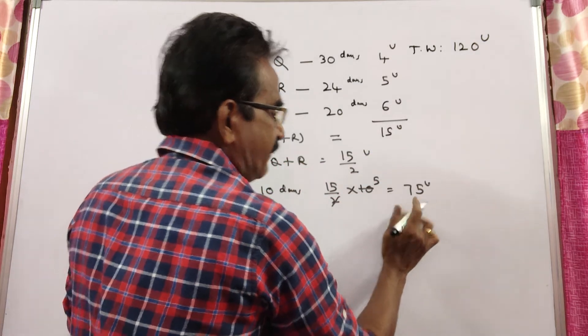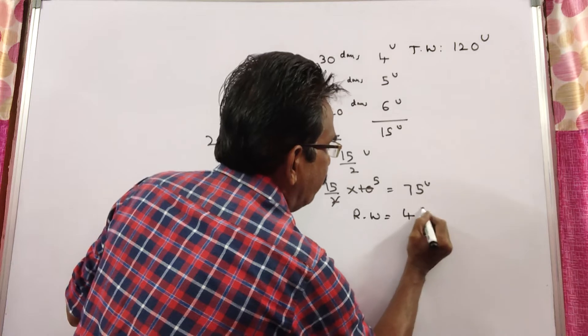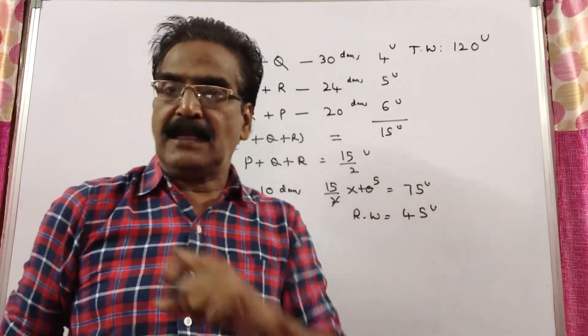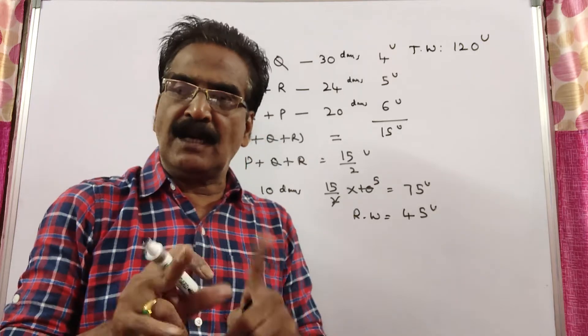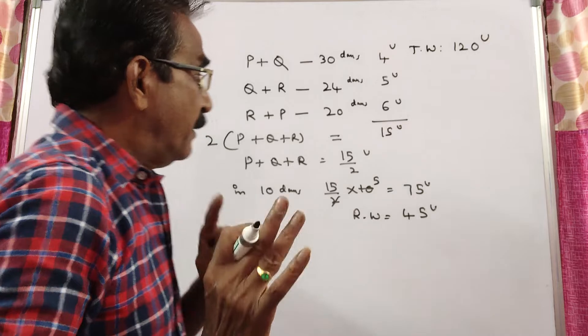120 minus 75, remaining work is equal to 45 units. This 45 units of work must be completed by A, Q and R left. So, this 45 units of work must be completed by P.